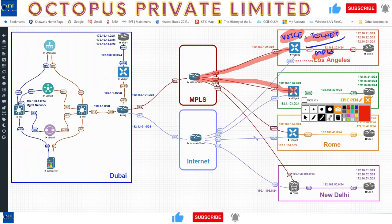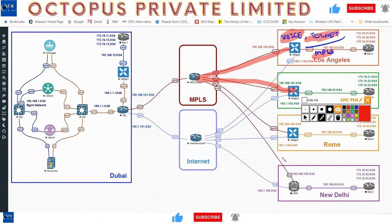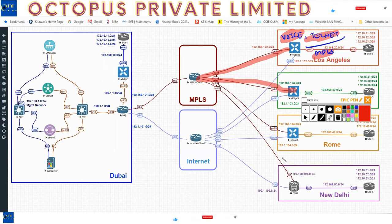You can do application-aware routing using nbar, but you cannot go deeper than Layer 7 characteristics using standard PBR. For example, you cannot distinguish between WhatsApp and a normal website since that requires checking Layer 7 characteristics, not just port numbers. The nbar engine is built into the vEdge to give you that ability.